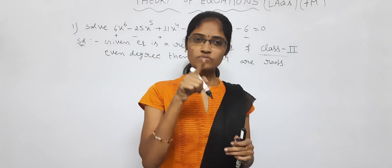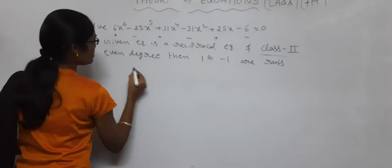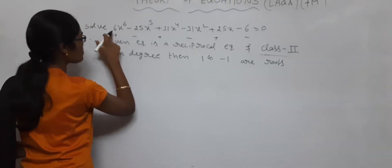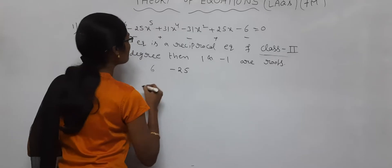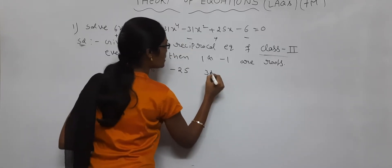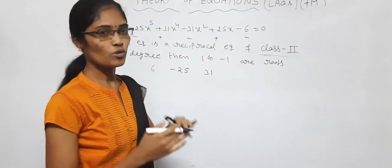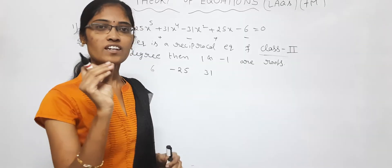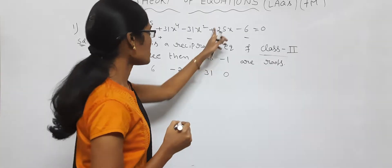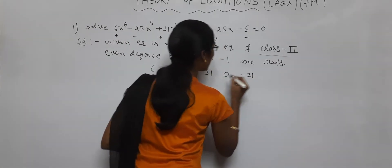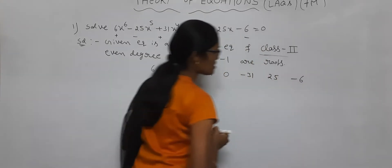So minus 1 and 1 — we apply synthetic division. Take the coefficients: x power 6 coefficient is 6, x power 5 coefficient is minus 25, x power 4 coefficient is 31. For x cube, the coefficient is not there so we take 0. Then x square coefficient is minus 31, x coefficient is 25, and the constant is minus 6.